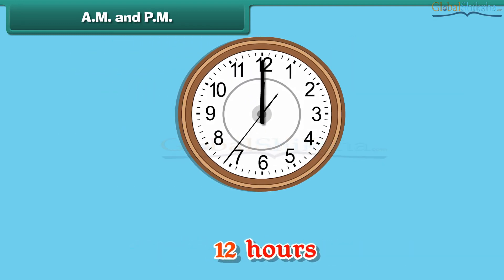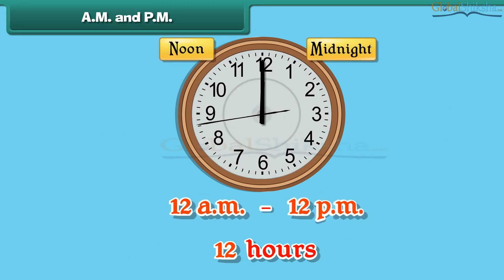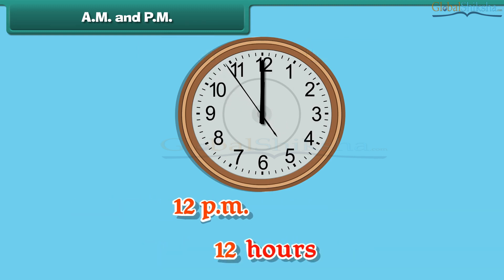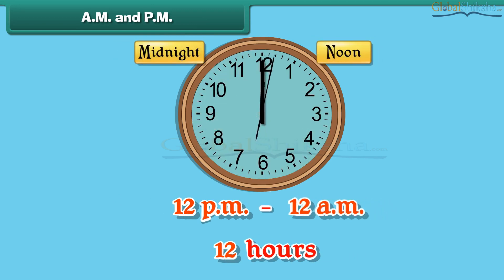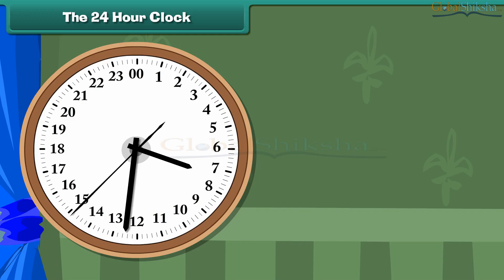The 24 hours of the day are divided into two periods of 12 hours each. The first 12-hour period is from 12 midnight to 12 noon. AM is used to denote the time of this period. The second 12-hour period is from 12 noon to 12 midnight. PM is used to denote the time of this period.